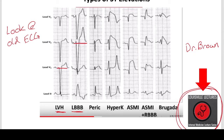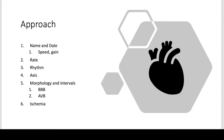So if you go through these steps for every EKG — checking name and date, speed and gain, rate, rhythm, and axis, QRS morphologies, bundle branch blocks and AV blocks, and lastly ischemia — you won't miss big things for your patients. It is a lot, and it will take a few minutes the first time you use this method, but after looking at hundreds of EKGs you'll be able to do it in seconds. Thank you for listening, and I hope this has been helpful.